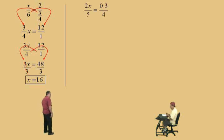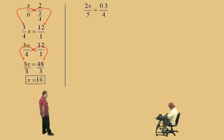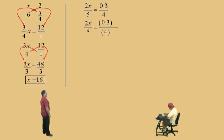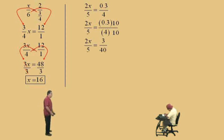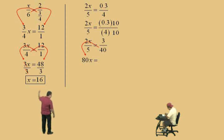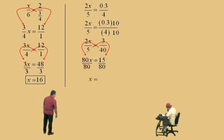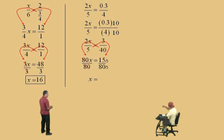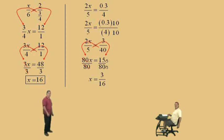Let's do another one. Here we go, Charlie: 2x over 5 equals 0.3 over 4. We're going to cross-multiply, but first we're going to clear that decimal out by multiplying top and bottom by 10. On the right-hand side, what's 0.3 times 10? 3. And 4 times 10? 40. So now we can easily cross-multiply. What's 40 times 2x? 80x. And 5 times 3? 15. How do we solve for x? Divide both sides by 80, and we get x equals 15 over 80. We can reduce by dividing top and bottom by 5: 15 divided by 5 is 3, and 80 divided by 5 is 16. So our answer is x equals 3 over 16.